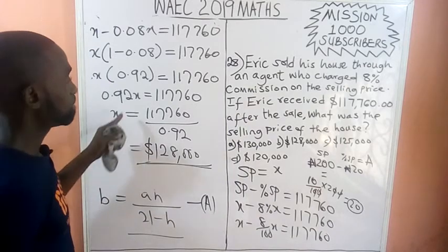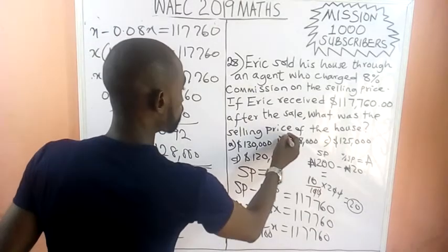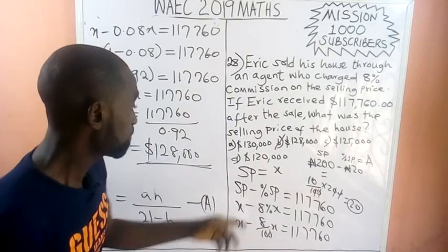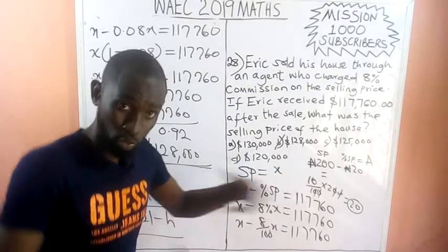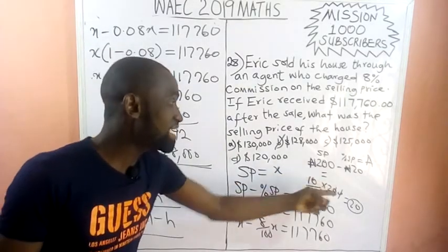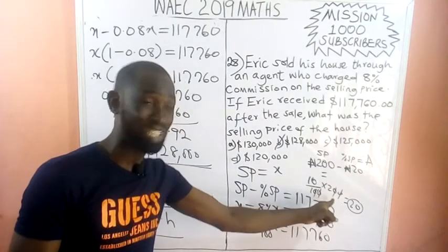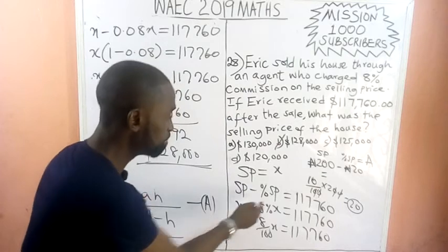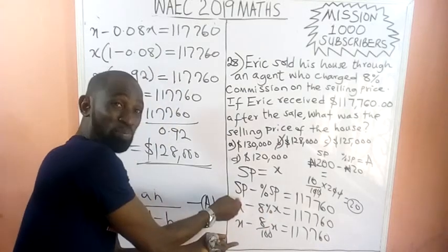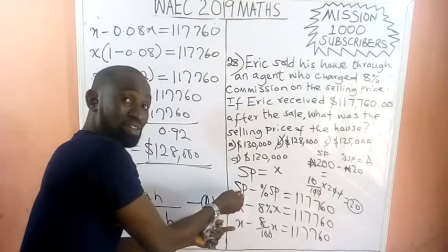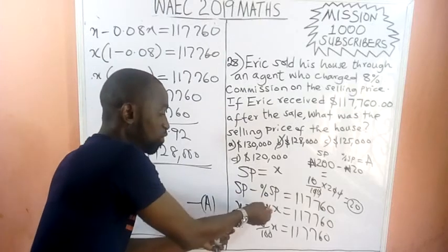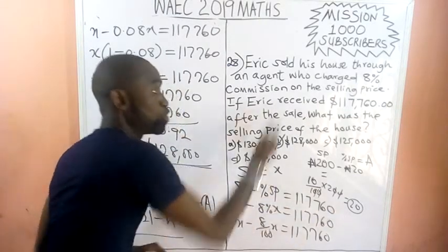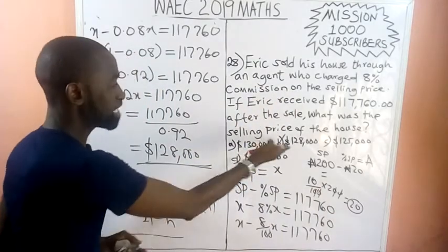The correct answer is option A — $1,280. To recap question 28: the agent removed 8% commission from the selling price, and the remaining amount is what Eric received. So the selling price was $1,280.